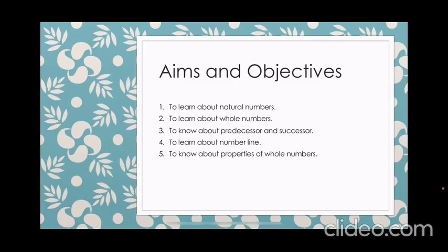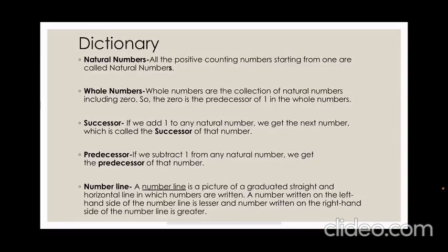properties of whole numbers. Now let us discuss the dictionary used in this chapter. Natural numbers - all the positive counting numbers starting from 1 are called natural numbers.